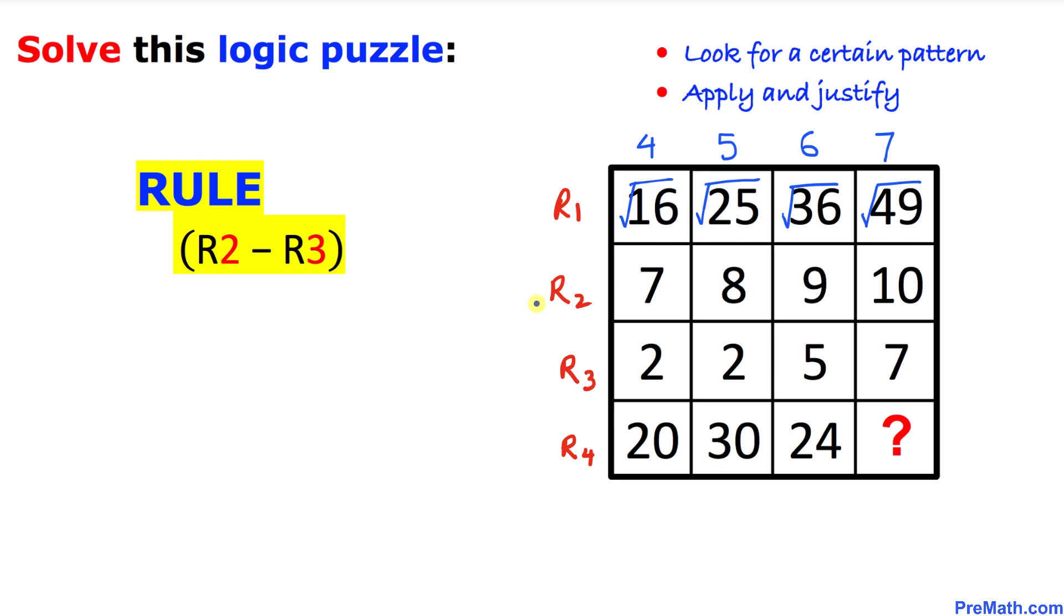And here's our next step. Let's go ahead and subtract row 2 minus row 3. So 7 minus 2 is going to be 5, 8 minus 2 is going to be 6, 9 minus 5 is going to be 4, and likewise here is going to be 3.